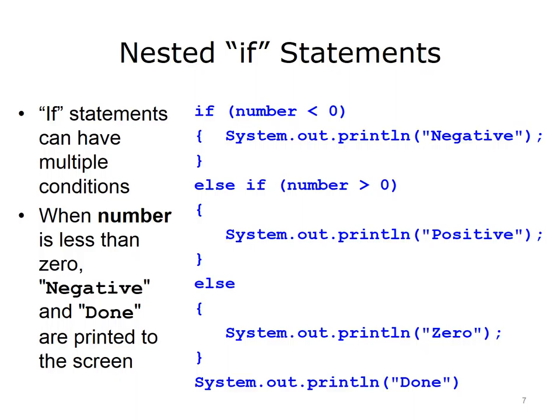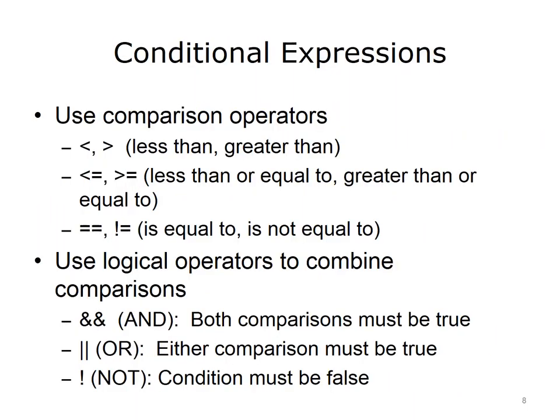For example, in this code segment, if the variable number has a value less than zero, negative is printed and the rest of the if statements are skipped. The next statement that executes is the one after the if statement — in this case, it is printing done to the screen. If the variable number is greater than zero, the statement prints positive to the screen, followed by message done. Finally, if the variable number is equal to zero, the word zero is printed on the screen, followed by the word done.